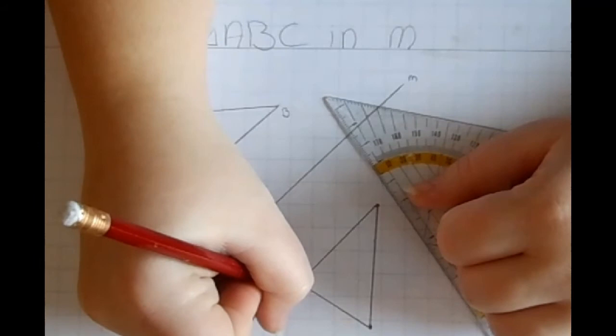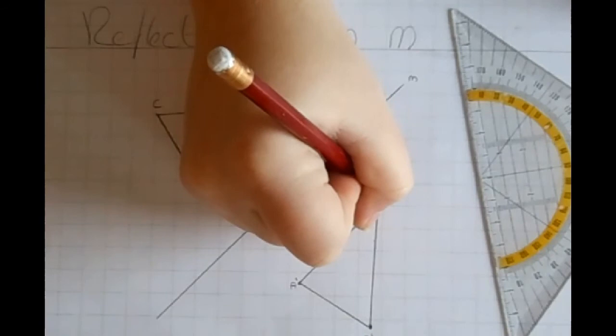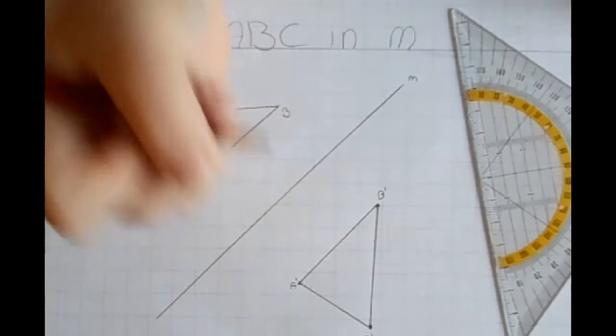And then you label the points. Because it is a mirror image you are going to label them the same way but you are going to put a prime symbol with it so you know it is the mirror image.